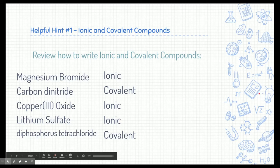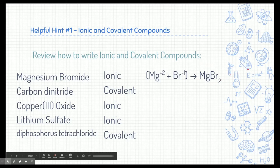Let's go back to magnesium bromide. We know it's ionic, therefore we have to worry about the charges. Magnesium is a plus two and bromine is a minus one based on its location on the periodic table. Therefore, to write the formula for magnesium bromide, we would need one magnesium and two bromines put together. Carbon dinitride is a covalent compound, so we don't need to worry about charge. That's where prefixes come into play — found on the back of your periodic table. Carbon dinitride is one carbon, and di means two, so two nitrogens: CN2.